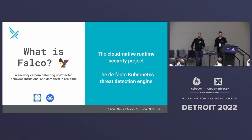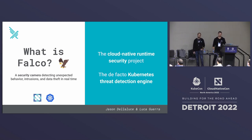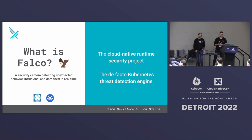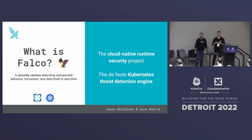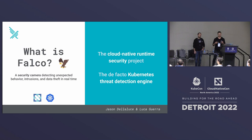First things first, what is Falco? Falco is a cloud-native security tool that watches everything happening in your system and sends you an alert when something suspicious is detected. It's a high-performance application developed by Sysdig and eventually contributed in 2017 to the CNCF. Currently Falco is well-loved in the community. It is recognized as the de facto standard for threat detection, and it's an incubating-level project in the CNCF. Currently we are in the process of applying for graduation.